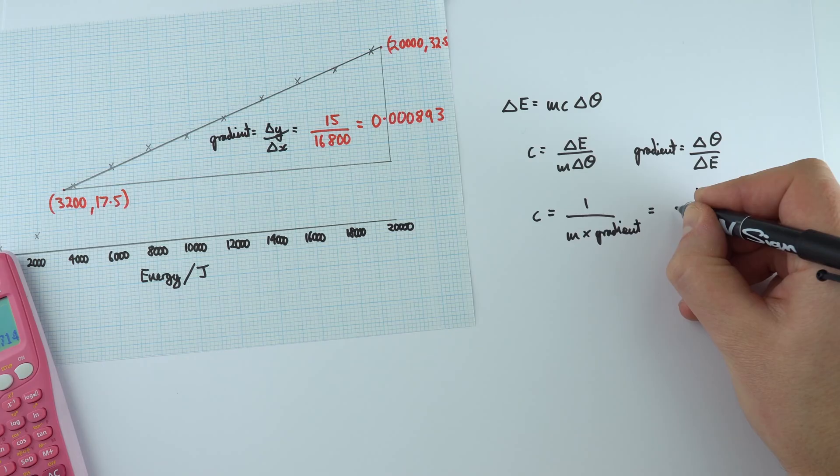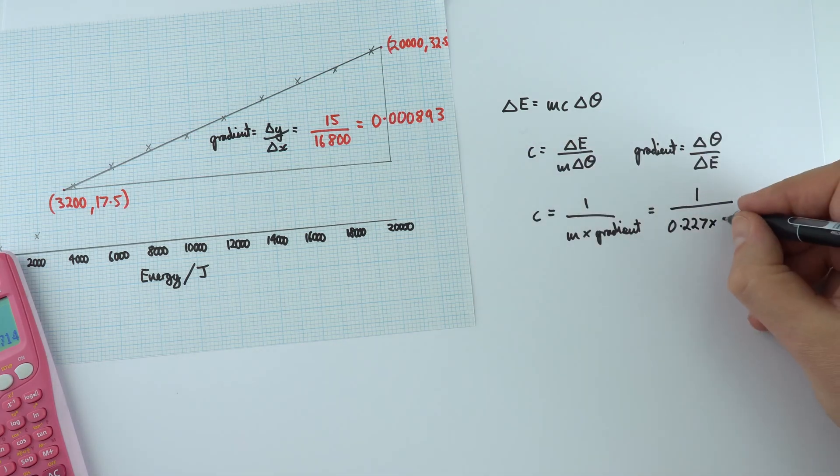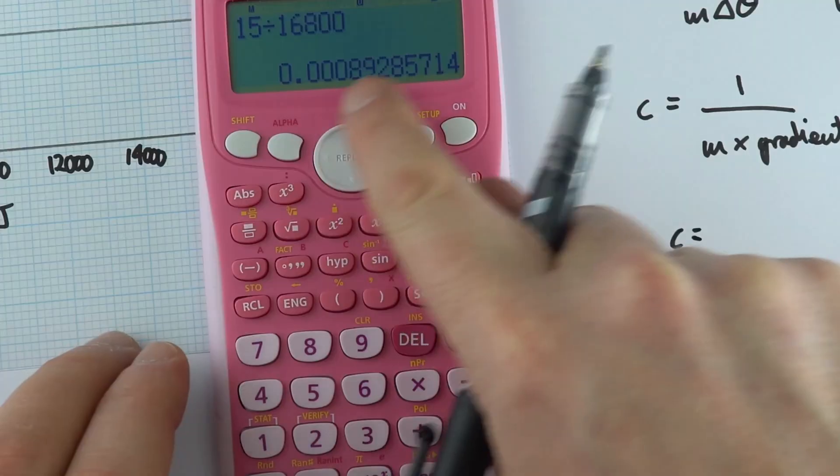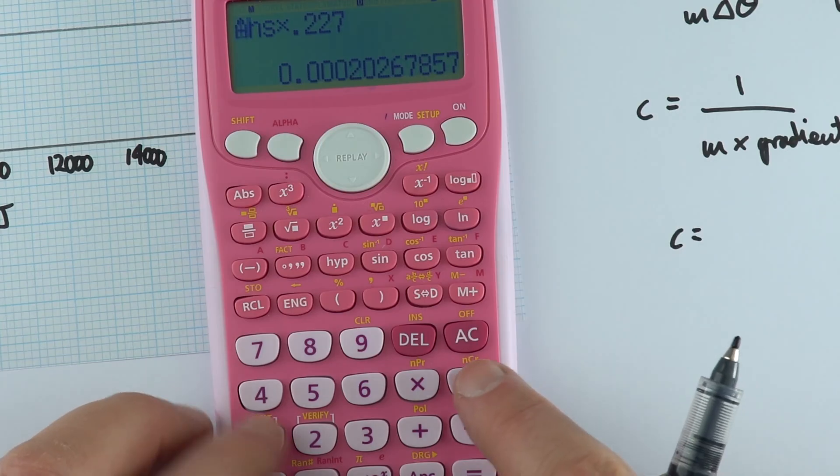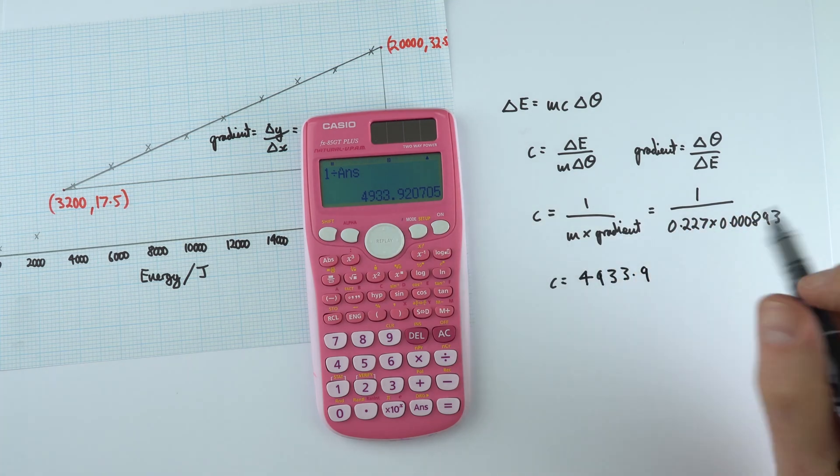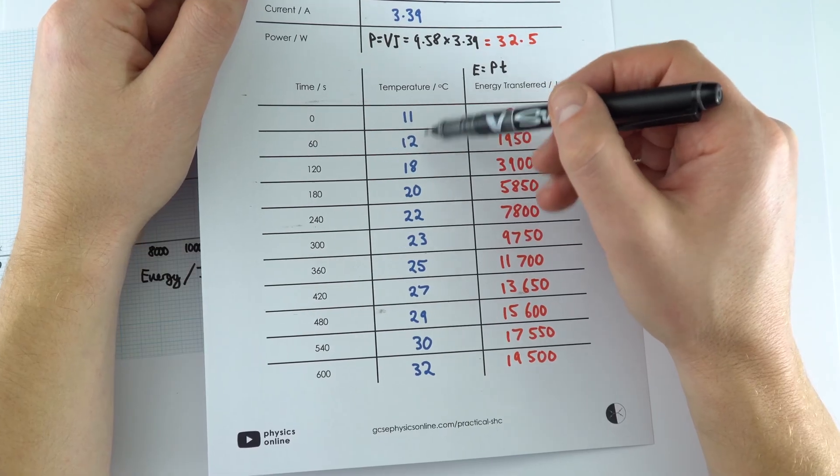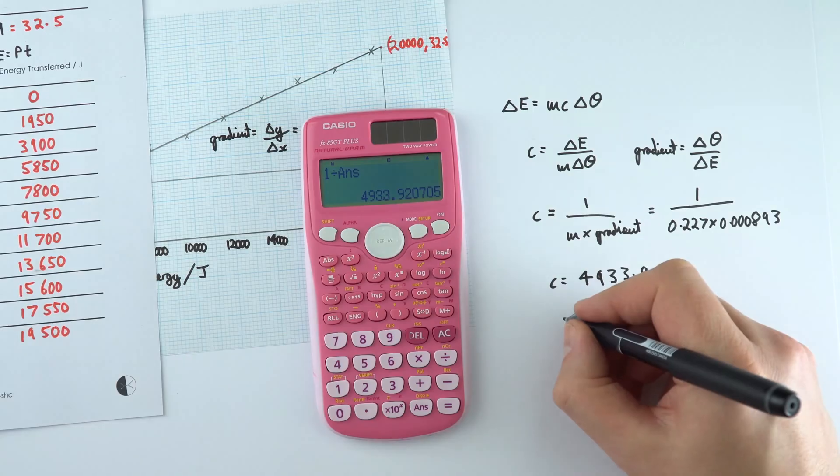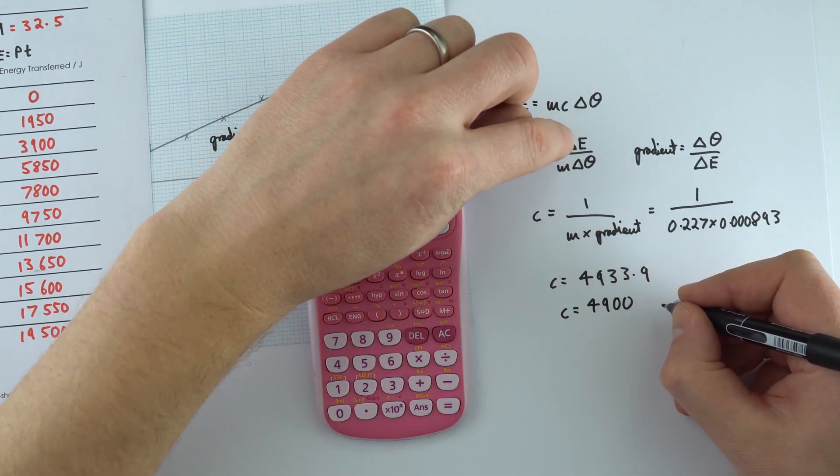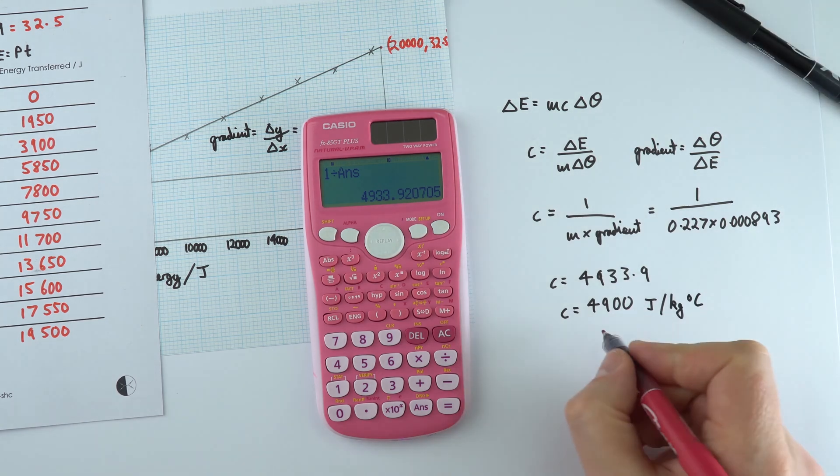So if we're actually going to do some rearranging, this is the equation we can come up with. The specific heat capacity of water is going to be 1 divided by the mass, and the mass is 0.227, and the gradient value here was 0.000893. So when we do that on the calculator, we're going to multiply that by 0.227, and then we're going to do 1 divided by this. This gives a value of 4933.9. That's a lot of significant figures. In reality, because we could only measure the temperature to the nearest one degree, our temperature data is to two significant figures. And that means we can say the specific heat capacity of water to two significant figures is 4900, and the units are joules per kilogram per degree Celsius.